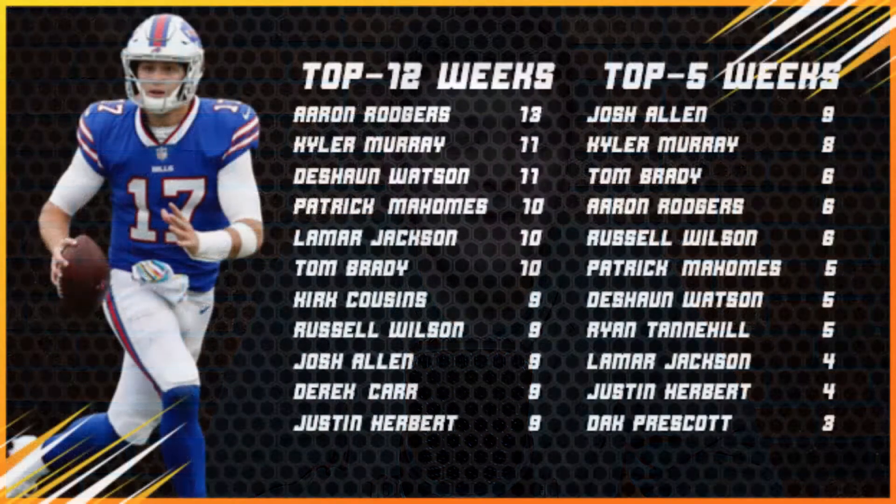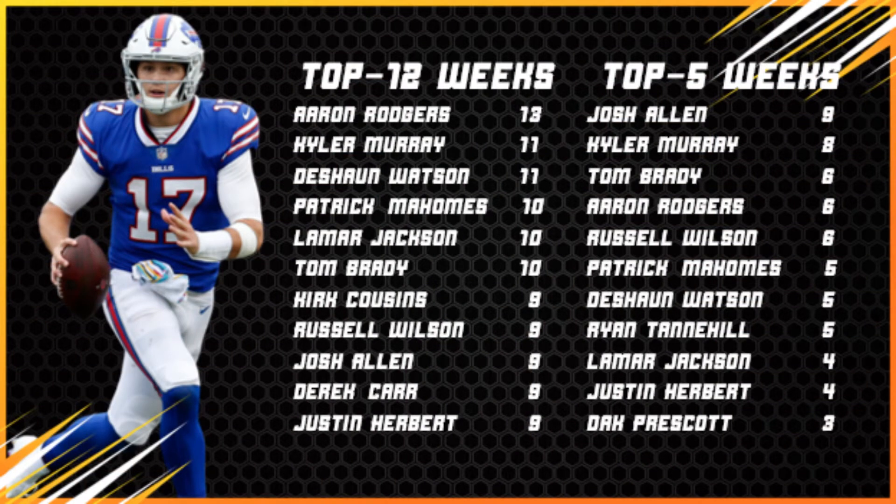The stat goes further than most people think. Josh Allen had the most top-five weekly finishes — when he was great, he was the best. But he finished ninth in top-12 finishes, tying him with Kirk Cousins and Derek Carr. That means you could have gotten as many startable weeks from Kirk Cousins as from Josh Allen. The difference being that when Josh Allen did finish in the top 12, it was five total touchdowns and 400 yards — so he was still more valuable — but the consistency numbers are eye-opening.